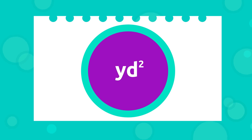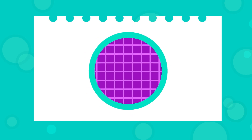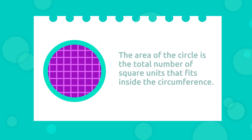Because a circle is a plane figure, we measure the area or surface of the circle in square yards, square inches, or square miles. As you can see in this picture, the area of the circle is the total number of square units that fit inside the circumference.